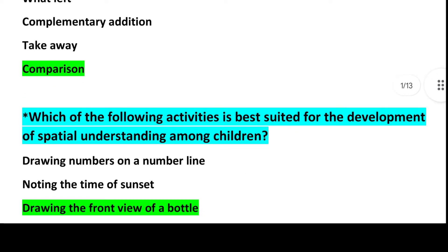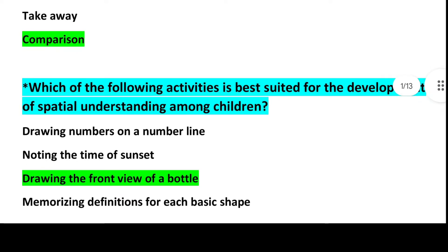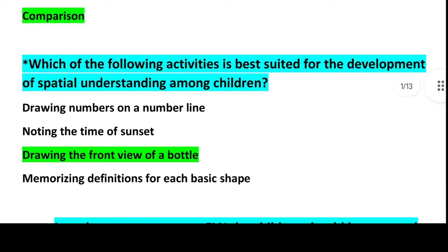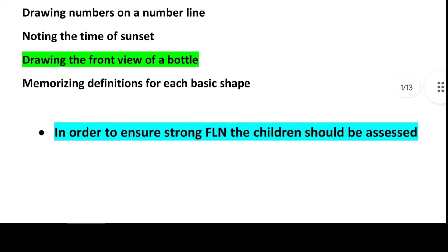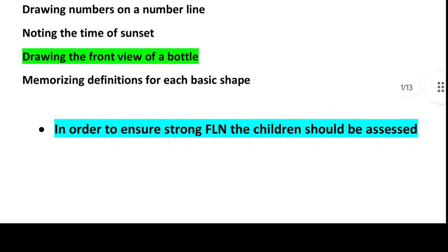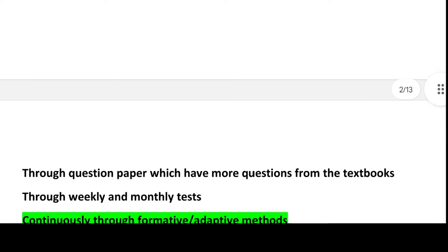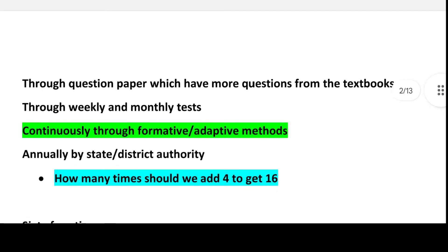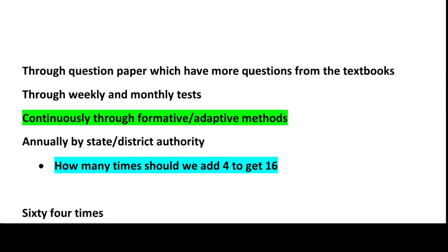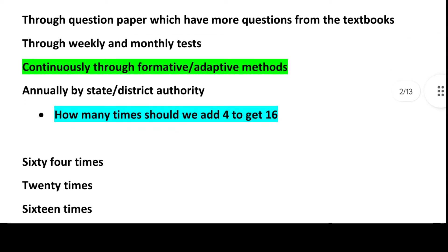Next question: Which of the following activity is best suited for the development of spatial understanding among children? Answer is Option 3, Drawing the front view of a bottle. Next question: In order to ensure strong FLN, the children should be assessed. Answer is Option 3, Continuously through formative or adaptive methods.